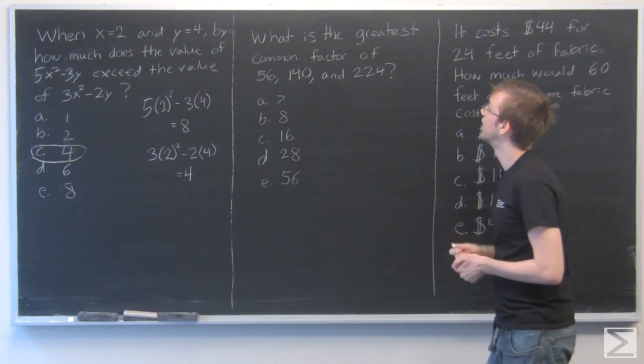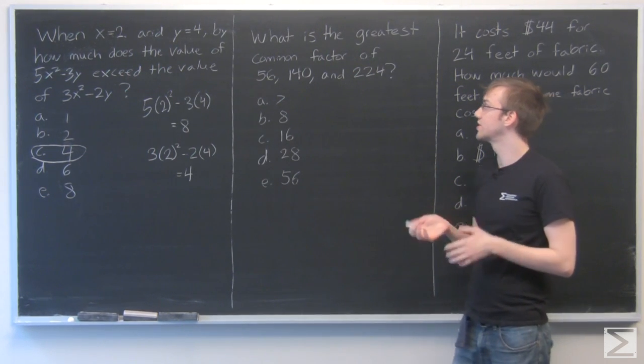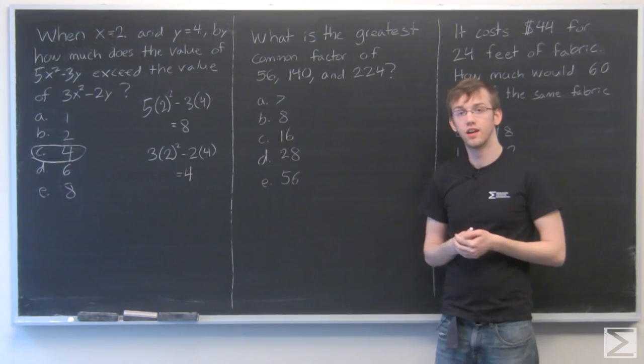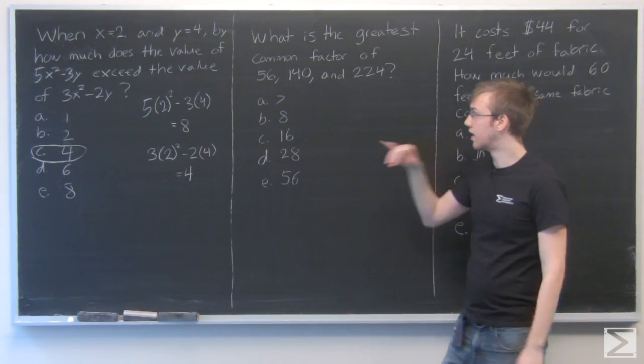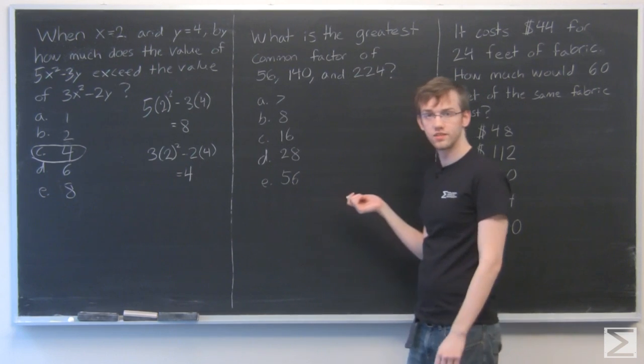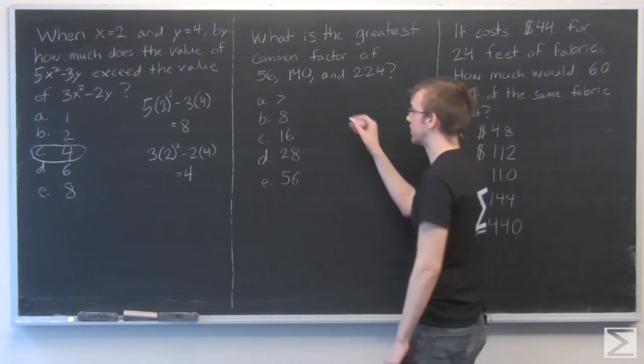All right, for the next question, what is the greatest common factor of 56, 140, and 224? Now, I think the best way to solve this in a hurry is to find the common factors of each number. So 56, I recognize that that is 8 times 7, so we'll start with that. Drawing a little factor tree right here.